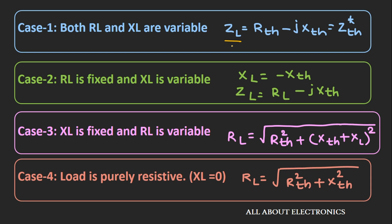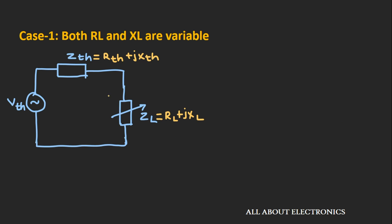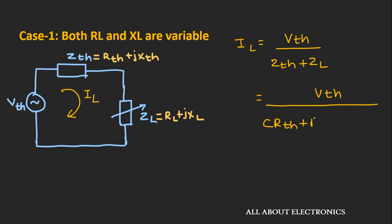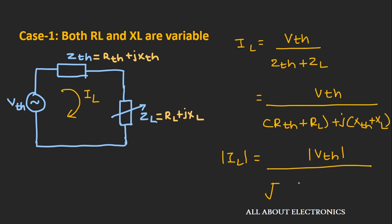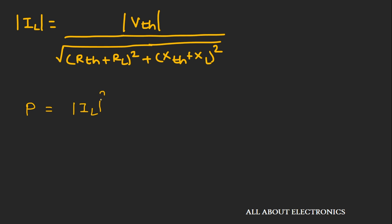For case one, where both RL and XL are variable, let us derive the expression for the load impedance which gives maximum power. The current IL flowing through the circuit can be given as IL = Vth / (Zth + ZL), which can be written as Vth / [(Rth + RL) + j·(Xth + XL)]. The power dissipated across the load is P = IL² × RL.